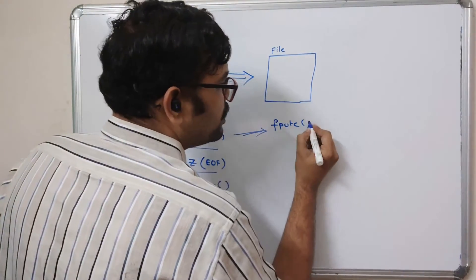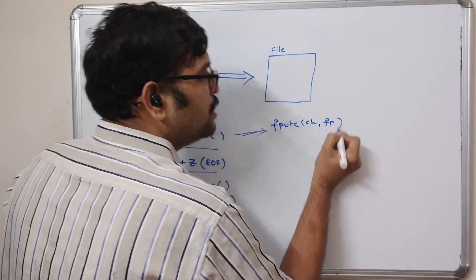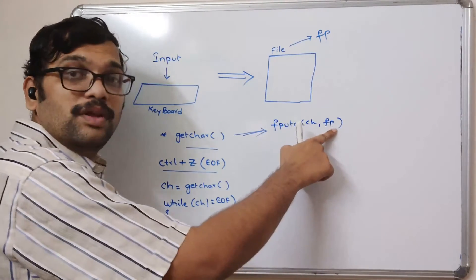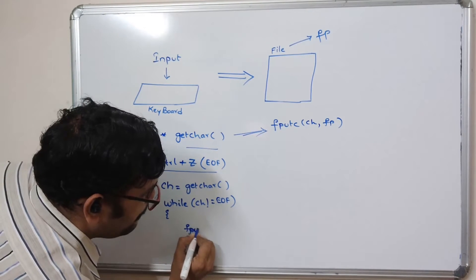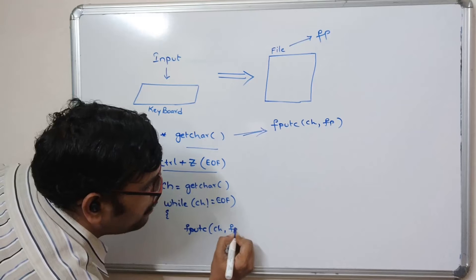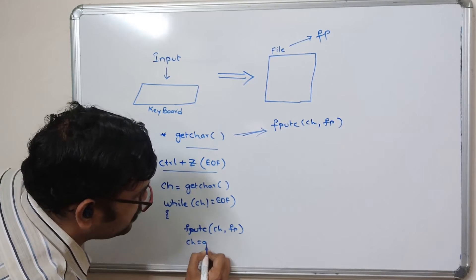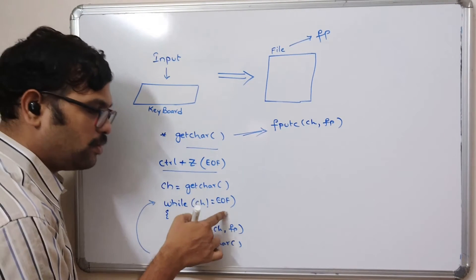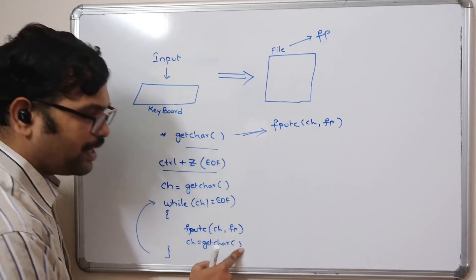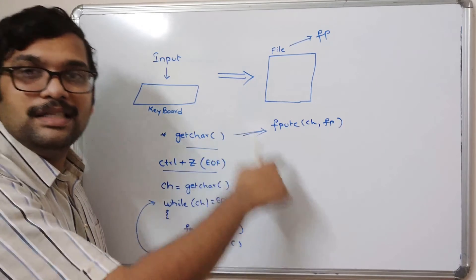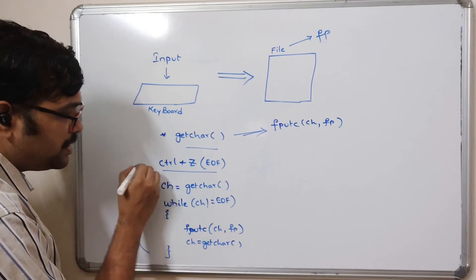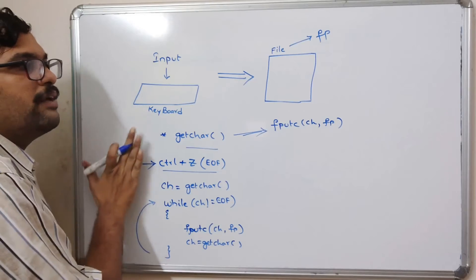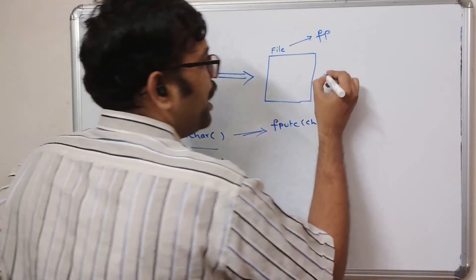fputc() takes two arguments: one is the character, and the other is the file pointer. Let the file pointer be fp. So we write: fputc(ch, fp). Then we read the next character again and repeat the process. It checks for end of file; if not true, it puts the character into the file, reads the next character, and this process repeats until the user presses Ctrl+Z.